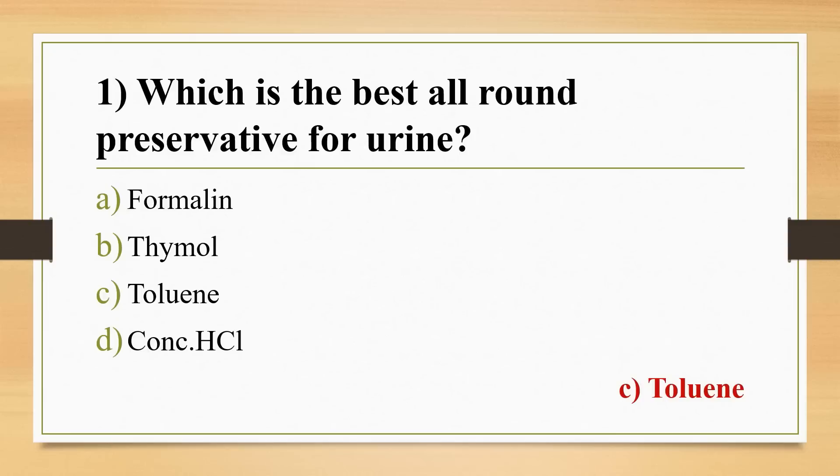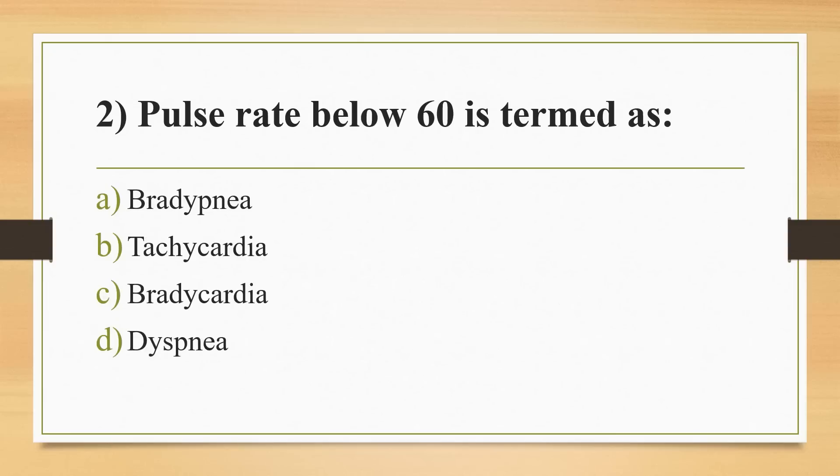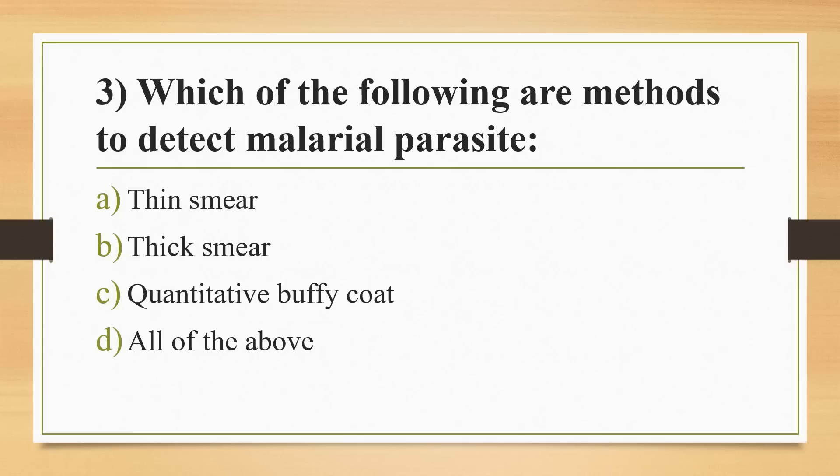Second question: pulse rate below 60 is termed as? Options: bradypnea, tachycardia, bradycardia, or dyspnea. Answer is Option C, bradycardia. Third question: which of the following are methods to detect malarial parasite? Options: thin smear, thick smear, quantitative buffy coat, or all of the above. Answer is Option D, all of the above.